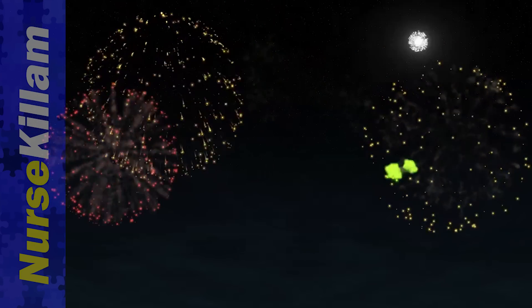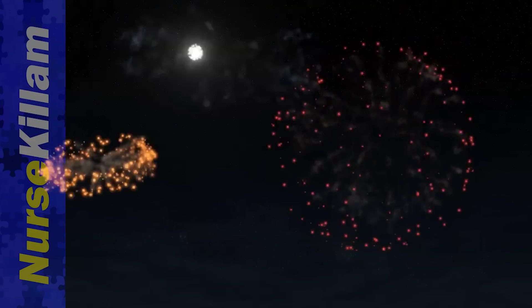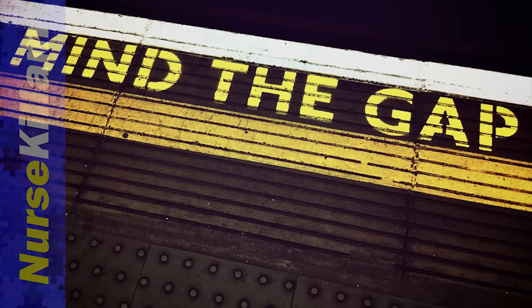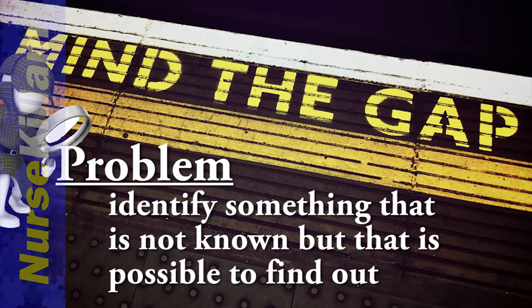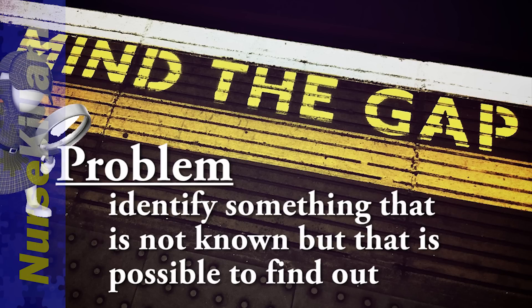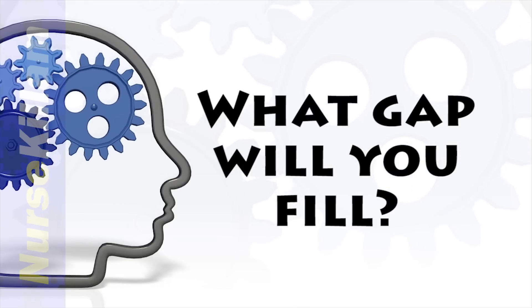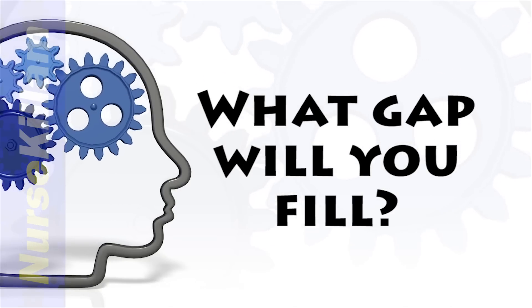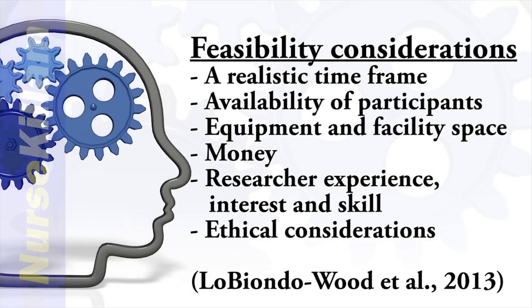Before you start to write, let's look at what a problem statement actually is. The problem statement needs to identify something that is not known, but that is possible to find out. A problem, by definition, is something that is wrong or needs close attention. In research, it is a gap in knowledge that you need to fill. Be sure to pick a problem that you can solve, at least partially.